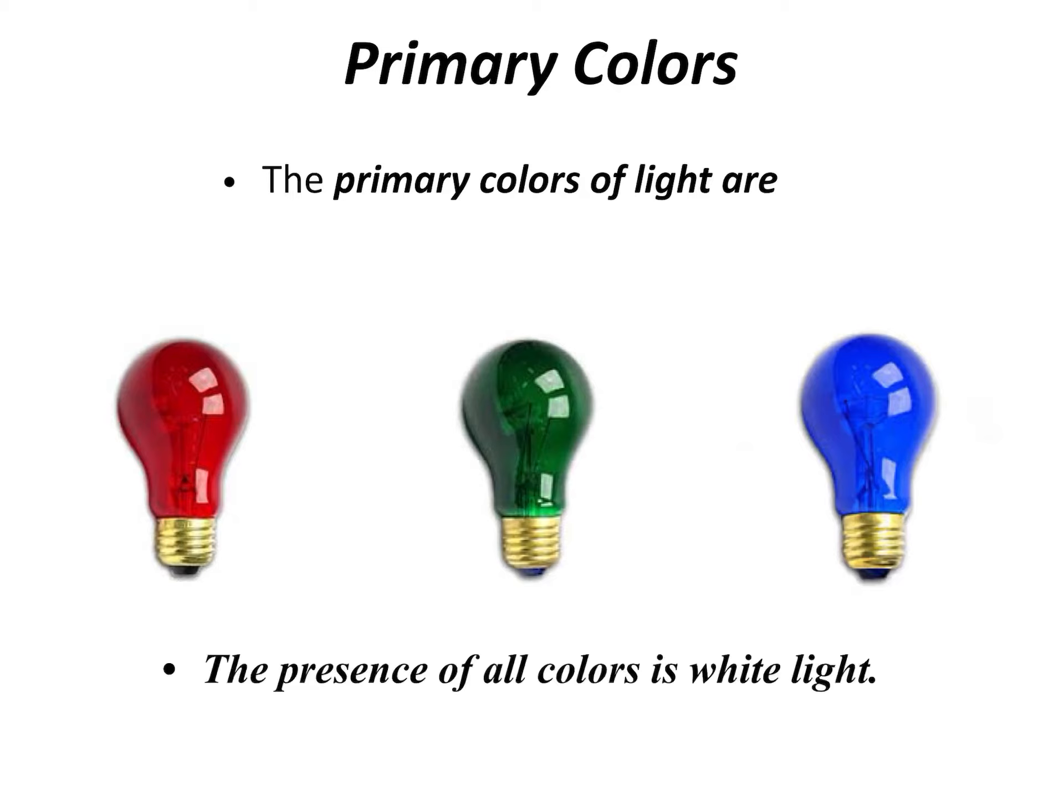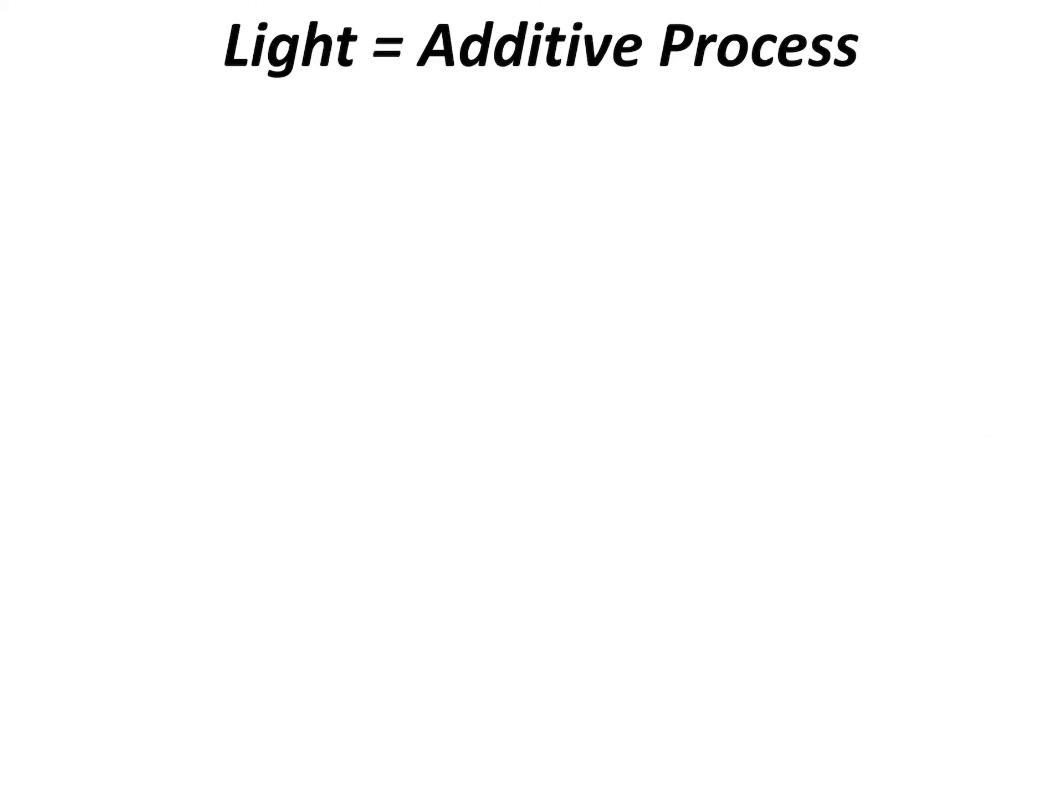So the primary colors of light are red, green, and blue. You mix all of those colors together, you get white light. You remove all of those colors, you get what we refer to as black. So I like to say turn off all the lights, cover your eyes, and you see nothing. That's what we refer to as black.